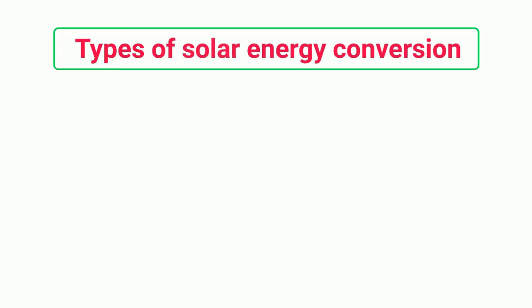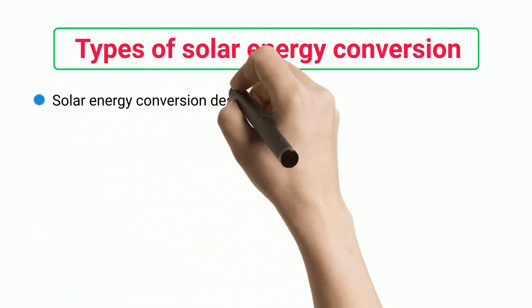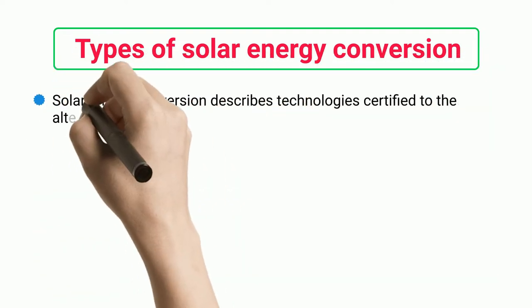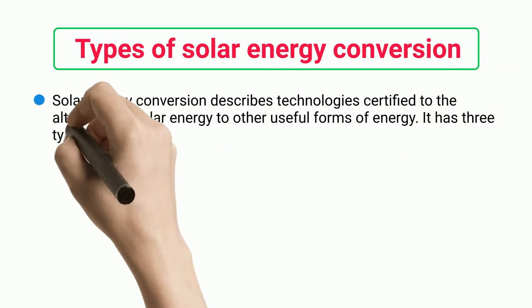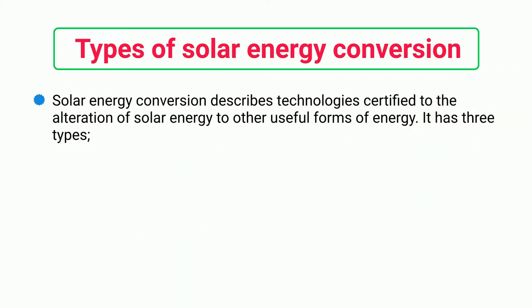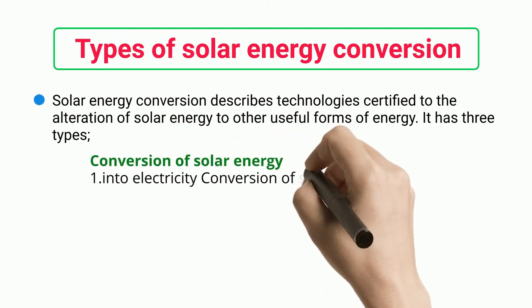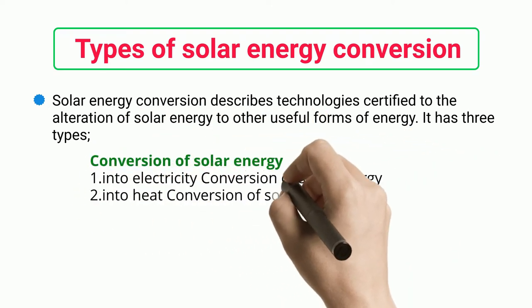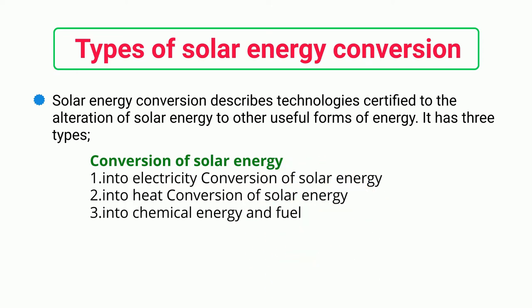Types of solar energy conversion: solar energy conversion describes technologies dedicated to the transformation of solar energy into other useful forms of energy. It has three types: conversion of solar energy into electricity, conversion of solar energy into heat, and conversion of solar energy into chemical energy and fuel.